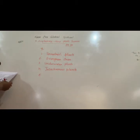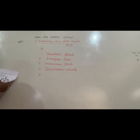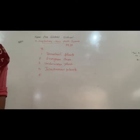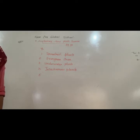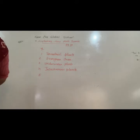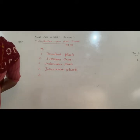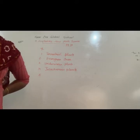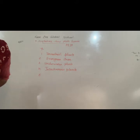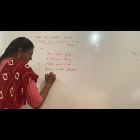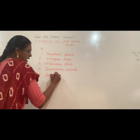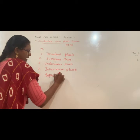Fifth one: plants that absorb nutrients from dead plants and animals — they are called saprophytic plants. Saprophytic means which eat only dead decaying matter — dead plants and dead animals. From that they get nutrients; they are called saprophytic plants.